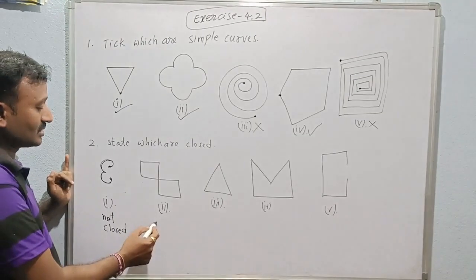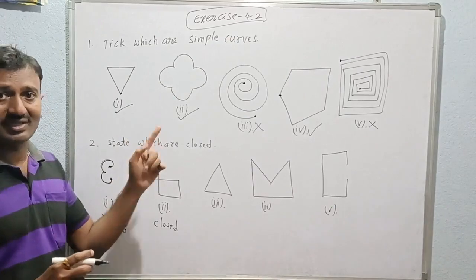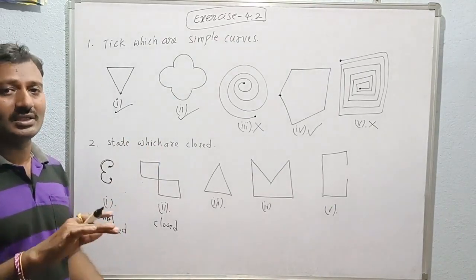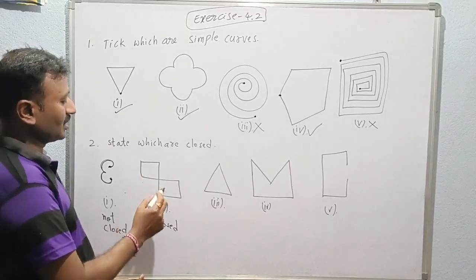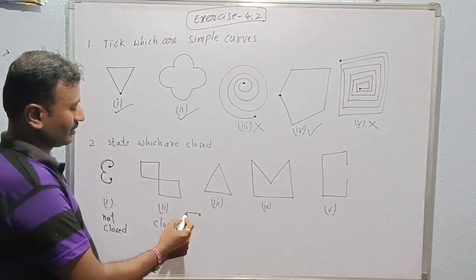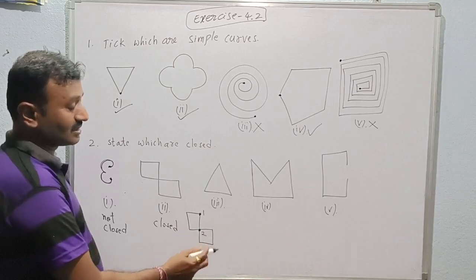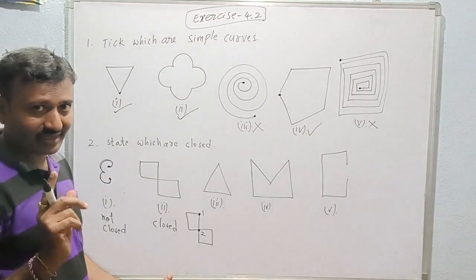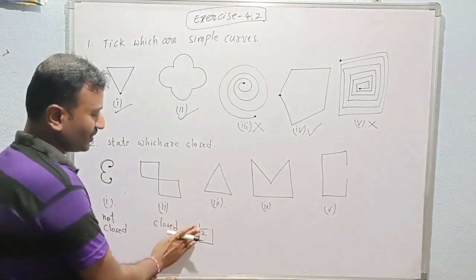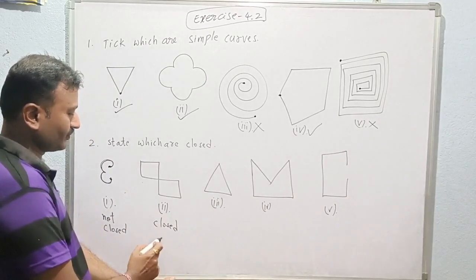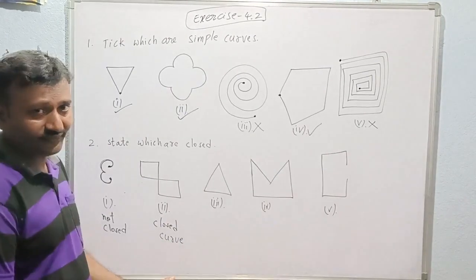Can we say this next figure is closed? Yes, it is closed but not a simple closed curve. According to the first part, a simple closed curve should be closed and should not intersect anywhere except at the end points. Whenever we draw it, we are intersecting here first and here second — two times it is intersecting. So this is only a closed figure and not a simple curve. We can write 'closed curve' or 'closed figure.'